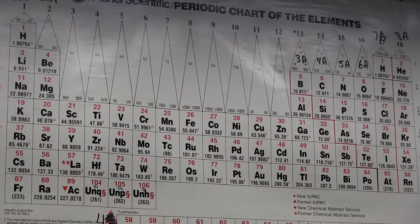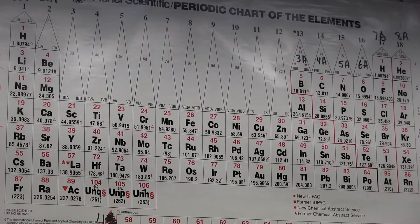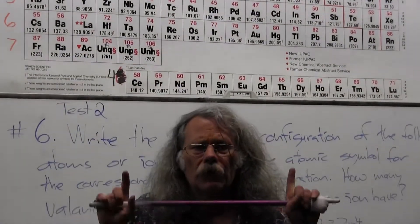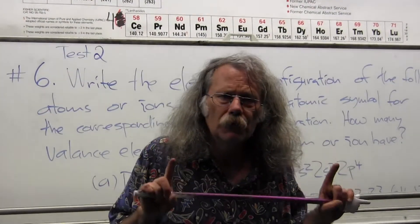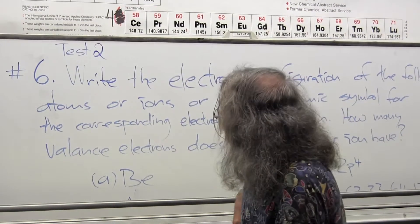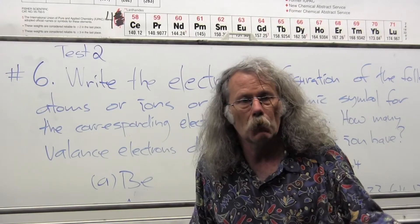Now let's talk about what a closed shell does. A closed shell is particularly stable because the electron orbital angular momentum adds up to zero.